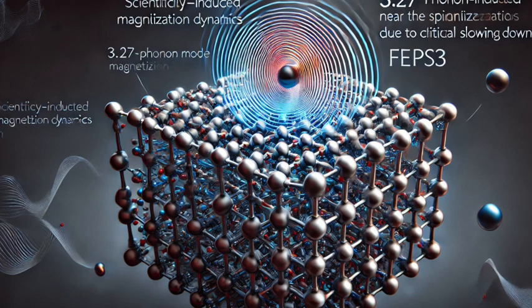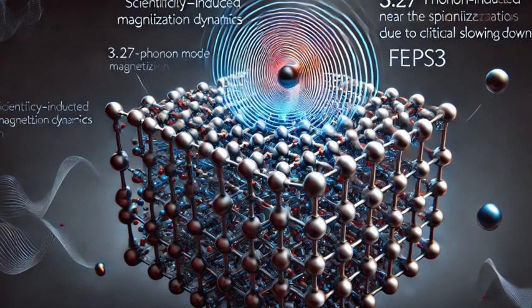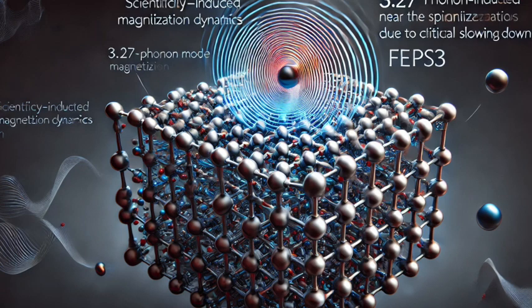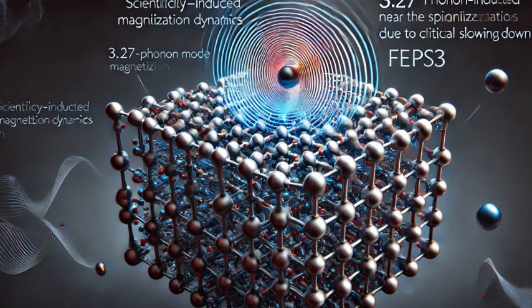Well, that sensitivity also applies to the processes that normally cause magnetization to fade away, to relax. As the system gets closer to its critical temperature, those relaxation processes slow down dramatically. So it's like the induced magnetization gets stuck in slow motion. Exactly. It takes much longer to decay back to its original state.